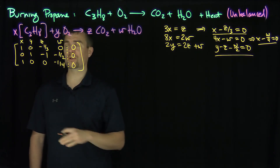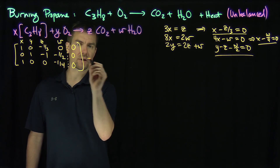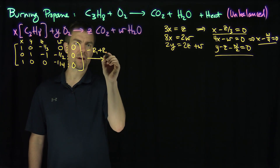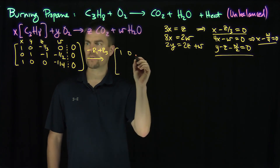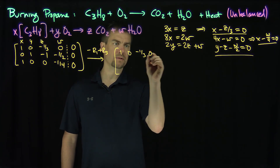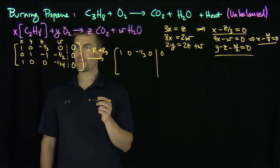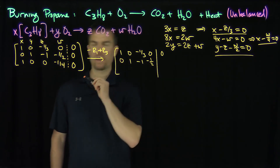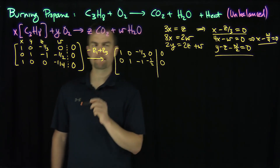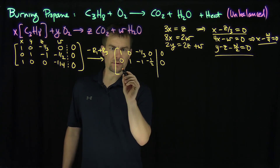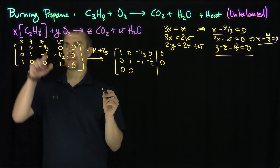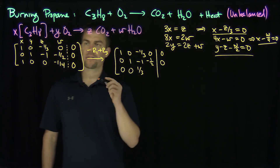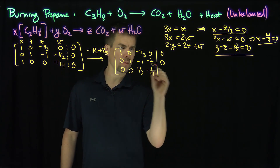The first row operation is negative row 1 plus row 3, which becomes my new row 3. Row 1 stays the same: 1, 0, negative one-third, 0, 0. Row 2 stays the same: 0, 1, negative 1, negative one-half, 0. Row 3 becomes: 0, 0, positive one-third — since negative row 1 flips the sign — and W becomes negative one-quarter, augmented with 0.